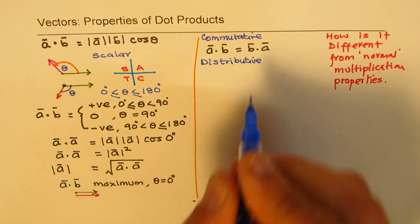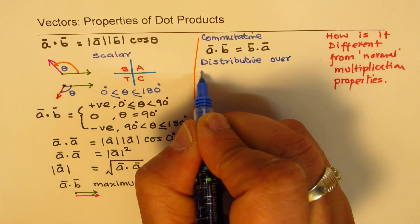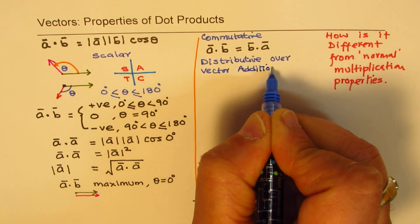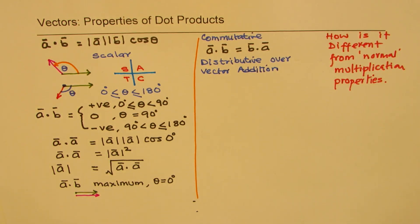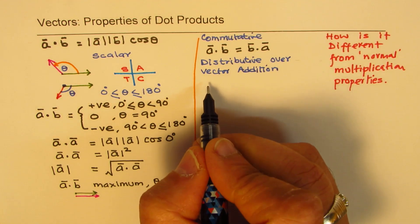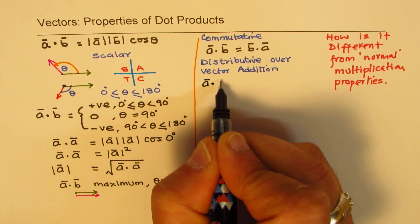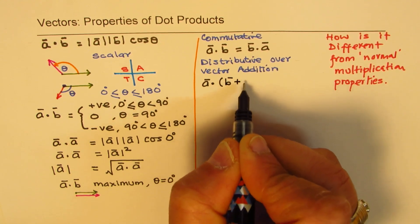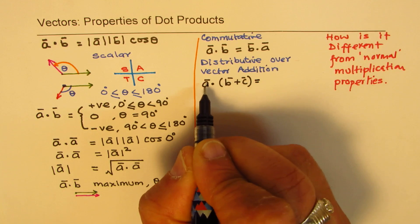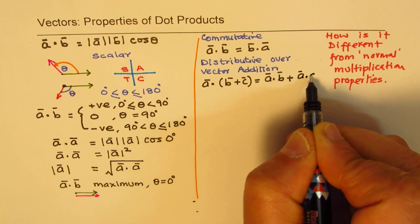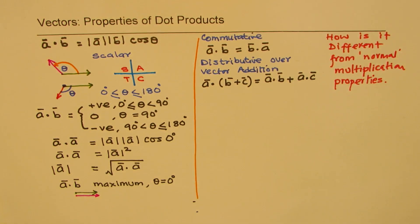The dot product is also distributive — specifically, it is distributive over vector addition. This means that a dot (b + c) equals a dot b plus a dot c.